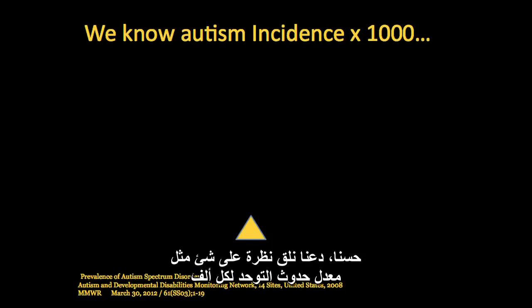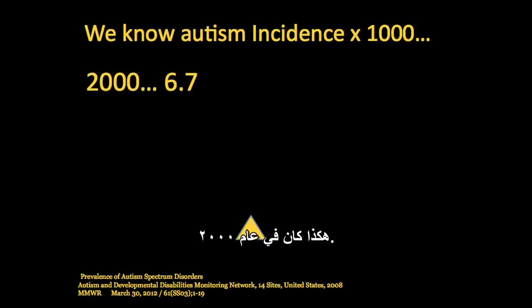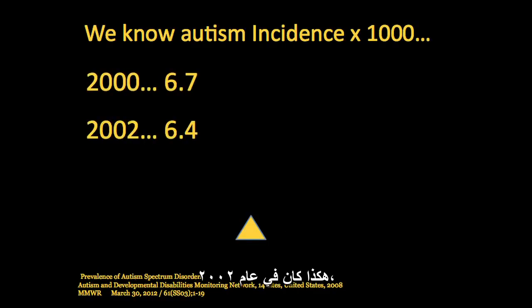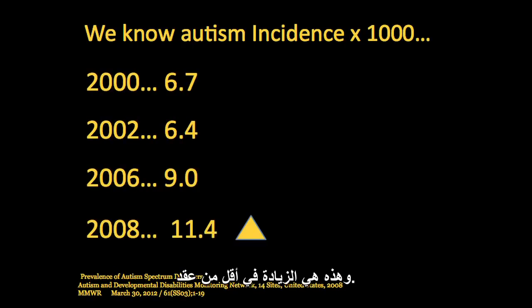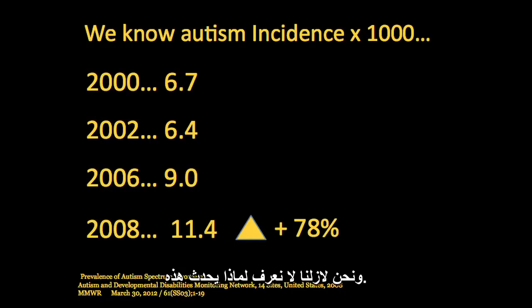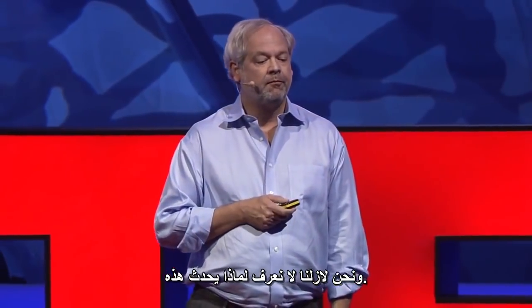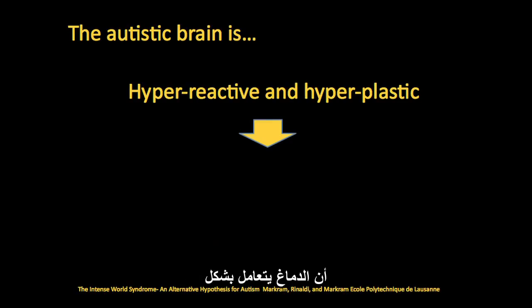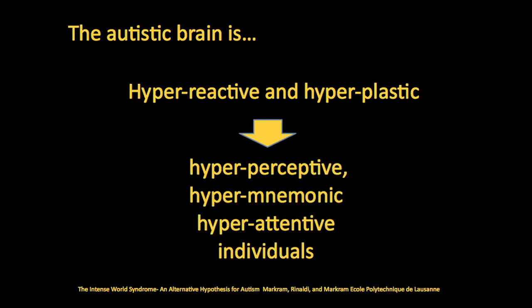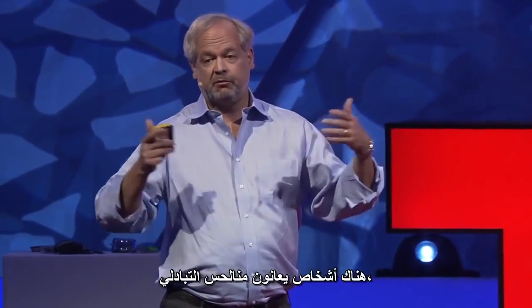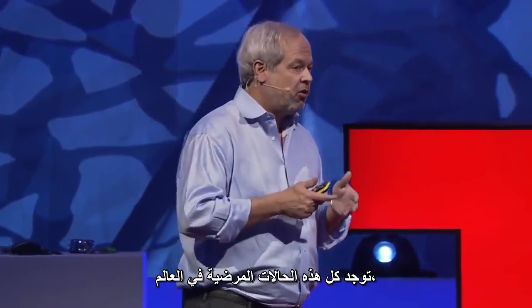Let's take a look at autism incidence per thousand. Here's what it looks like in 2000, 2002, 2006, 2008. Here's the increase in less than a decade. We still don't know why this is happening. What we do know is that potentially the brain is reacting in a hyper-reactive, hyper-plastic way, creating individuals with these conditions. And this is only one condition out there — you've also got people who are extraordinarily smart, people who can remember everything they've seen, people with synesthesia, people with schizophrenia. We've got all kinds of stuff going on and we still don't understand how and why.